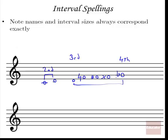So even though F sharp and G flat are the same notes on the keyboard, the letter names determine the interval number. A C to a D will always be some kind of second; a C to an E will always be some kind of third. Similarly, if someone asks for a seventh above F, you know it will be some sort of E, because counting up seven notes from F lands on E.